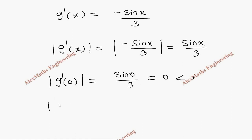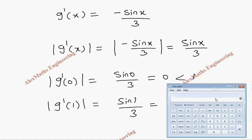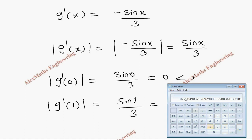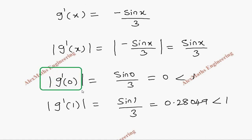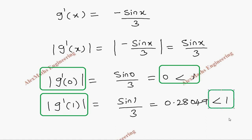g'(0) = 0, which is less than 1. And g'(1) = sin 1 / 3. We calculate sin 1 and divide by 3, which gives 0.28049. So |g'(1)| = 0.28049, and this is also less than 1. Both values of |g'(0)| and |g'(1)| are less than 1, so the method can be applied.